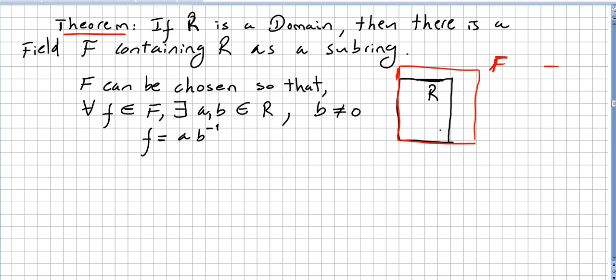So we have R here, and if R is an integral domain, then there is a field F containing R as a subring. And more, we can choose this field so that for every element f in the field there will be an element a in the ring and b in the ring, such that f is equal to a times b inverse.